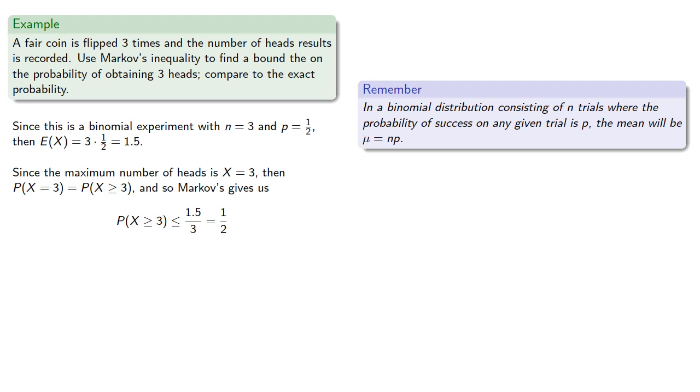Now we can compute the exact binomial probability, and this will be 1/8, which is considerably less than the upper bound given by Markov's inequality.